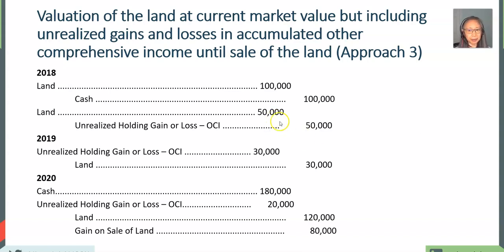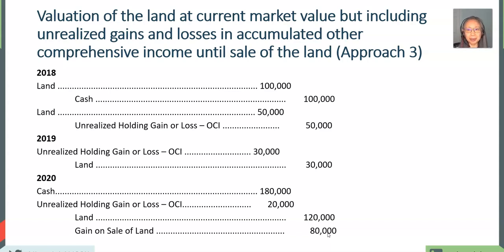Those gains and losses are actually unrealized — the company did not receive or lose cash for the change in market value of the land. In this particular example, approach three allows us to have a good idea of what the current market value of the land is, as well as understand that there were unrealized gains or losses. When the final sale happened, we see the gain based on the actual original purchase price and the selling price. The focus in this class is not so much on preparing the statement, but rather understanding the information value and content of the financial statements.